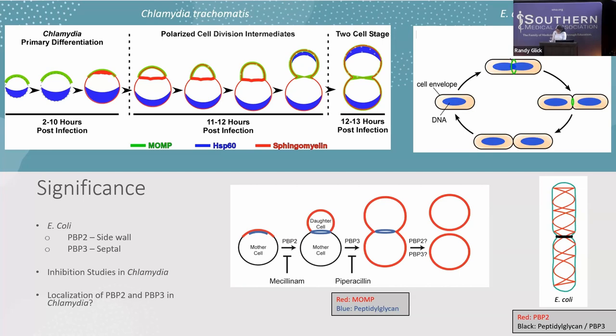Surprisingly, inhibition experiments using mecillinam and piperacillin found that PBP2 and PBP3 in chlamydia affect the bacterium in a different manner than E. coli. Chlamydia cells treated with PBP2 inhibitors are affected differently, while cells treated with PBP3 inhibitors can initiate budding but arrest at an early stage in the process. Therefore, it was our goal to determine the temporal and spatial distribution of PBP2 and PBP3 during various stages of budding to see if they interact with peptidoglycan found at the septum.